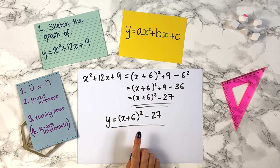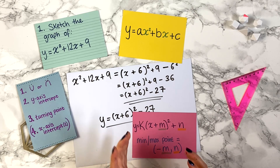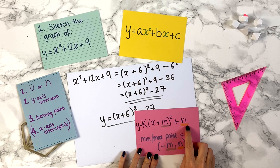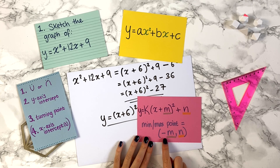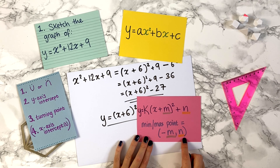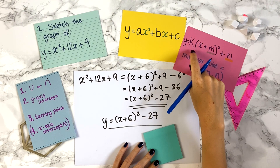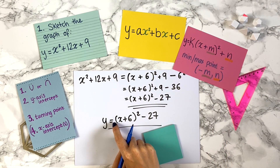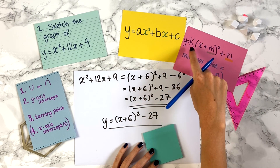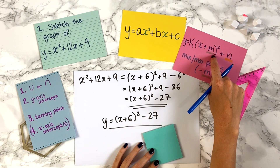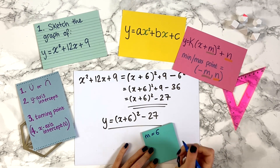Completing the square is helpful because if your graph equation is in the form y equals k times (x plus m) squared plus n, then the turning point is at the point (−m, n). Looking at our equation, the number in front of the bracket is 1 — but the k value doesn't affect the turning point coordinates. What matters is m, which is 6.